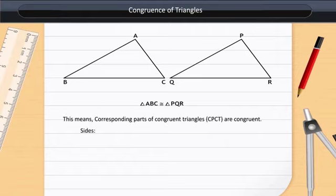This means corresponding parts of congruent triangles, CPCT, are congruent.